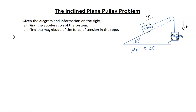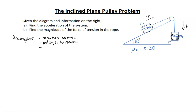Some assumptions we're going to make here — it's important to state these first, because they aren't necessarily the same assumptions you'd make in a first-year university course. One assumption is that the rope has no mass. Another is that the pulley is frictionless — in first-year university physics you assume the pulley is not frictionless and you take into account the moment of inertia. The other assumption is that the rope does not stretch.